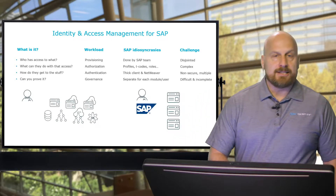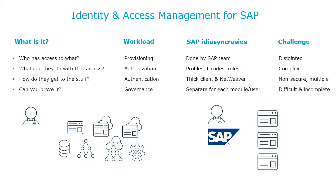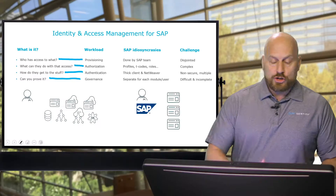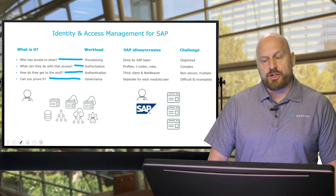The bottom line is identity and access management comes down to four things. Who has access to what? That's called provisioning typically. What can that person do with that access? That's called authorization. How does that person get to the stuff they need — the stuff that they are authorized to get to? That's called authentication. And then can you prove that they are doing it correctly? That's called governance. So the workloads are provisioning, authorization, authentication, and governance.